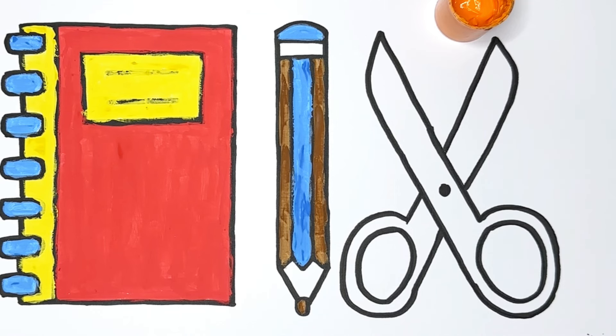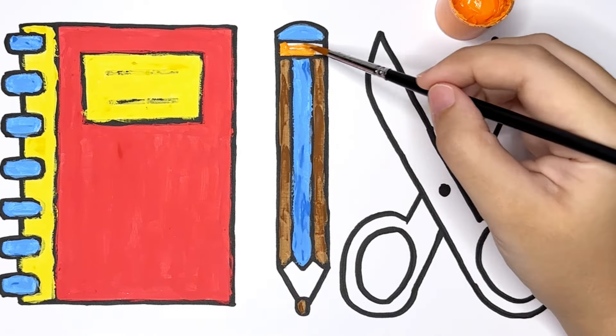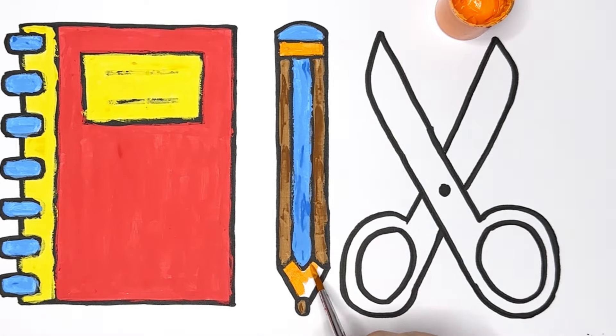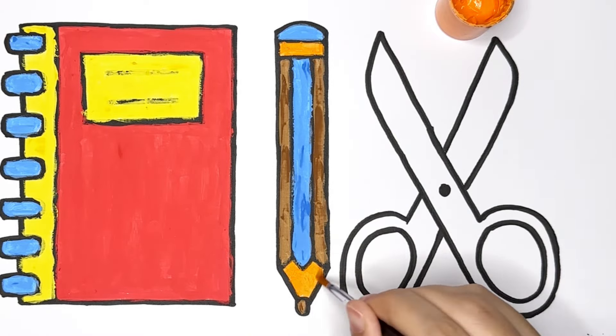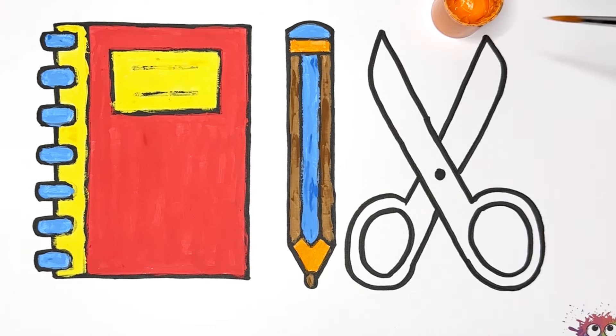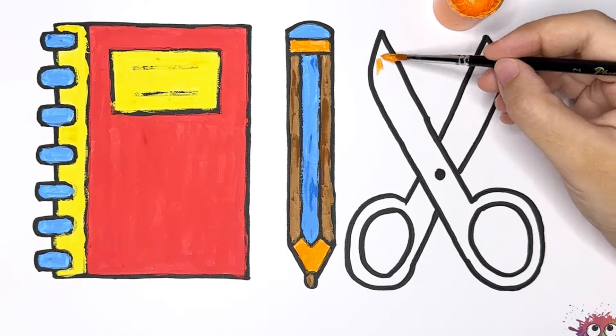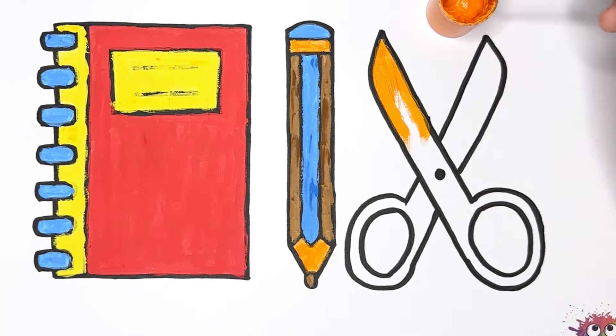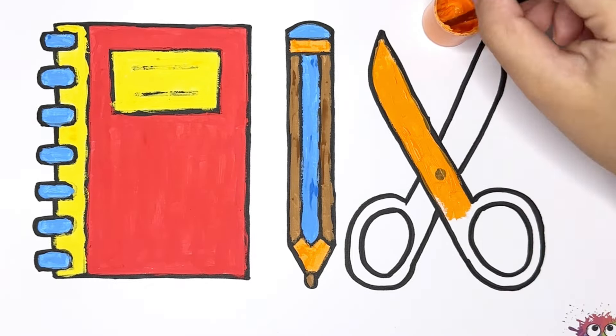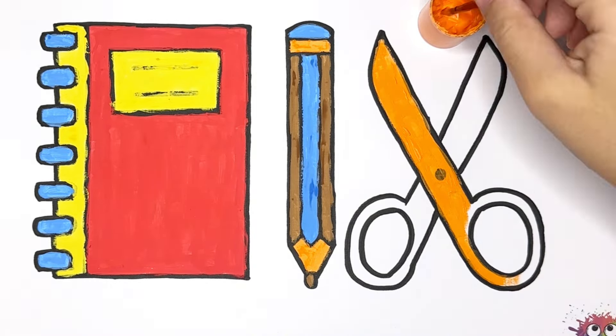Orange! Now, let's make our scissors extra awesome by coloring them orange. Orange is a bright and cheerful color, just like the sun.